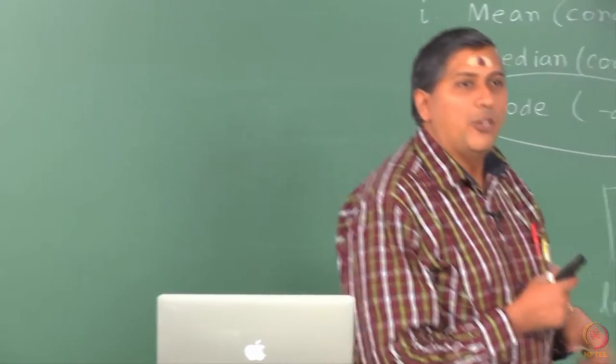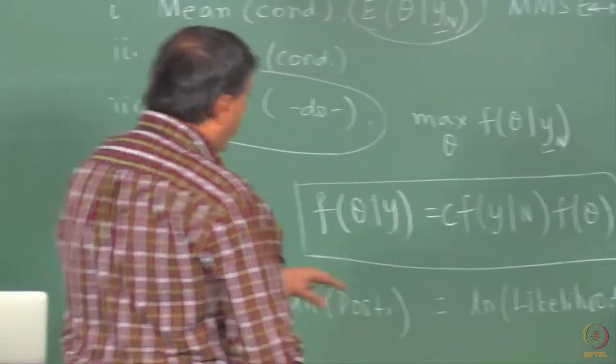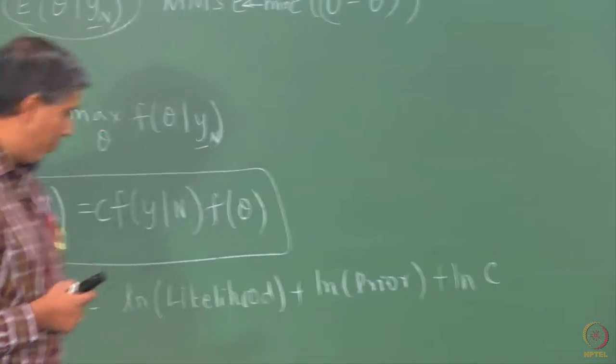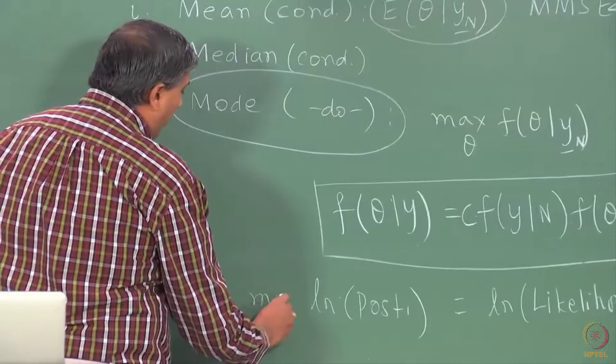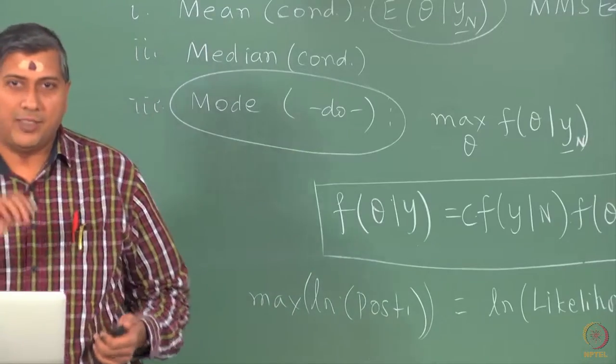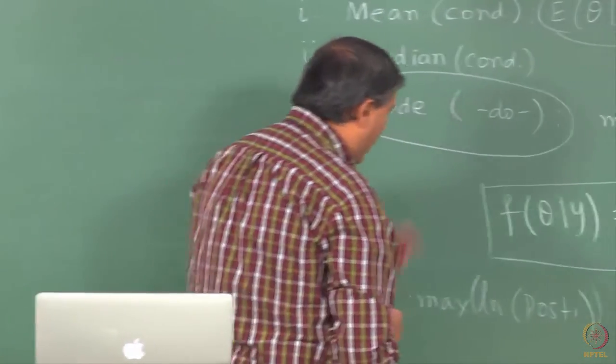Now, what happens if the prior is not uniform? You have to ignore this, this is not going to play any part in the optimization. What I am going to pick in MAP is the maximum of this, whether I pick the maximum of PDF or maximum of logarithm of PDF, it does not make a difference. We have talked about it in MLE as well.